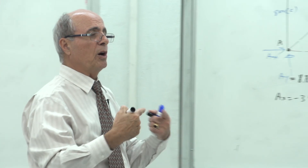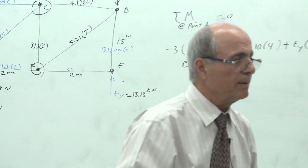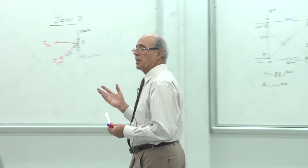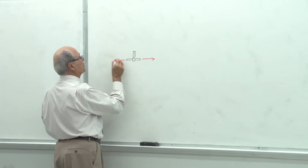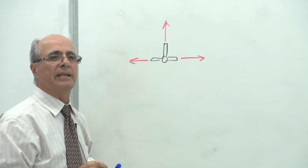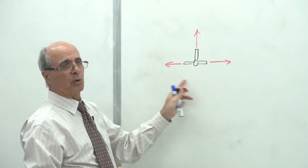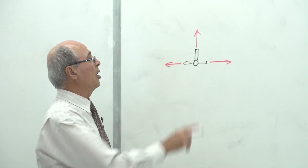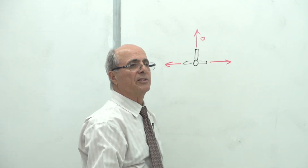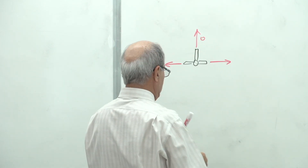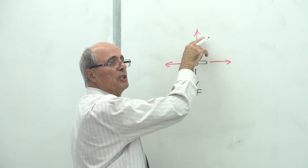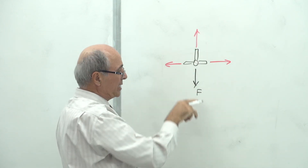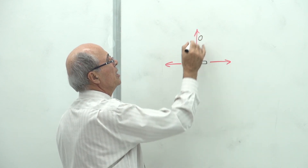Note: if there is an external force at that joint, the analysis changes — the vertical member would need to balance that force. This is only a zero-force member when there is no external load at that joint. The same reasoning applies even when the two members are not along the x and y axes — just rotate your coordinate axes to align with two of the members, and the third must be zero.